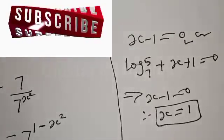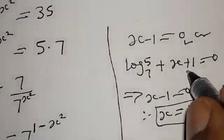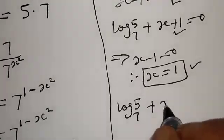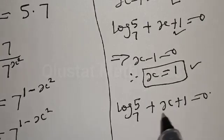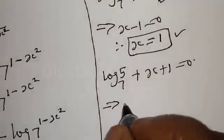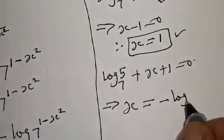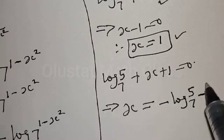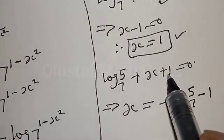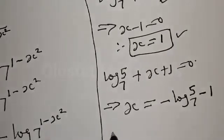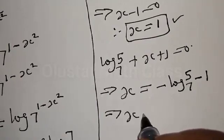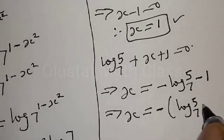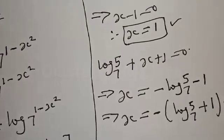That gives us one value of x, which is 1. Now let's look at the second factor: log 5 base 7 plus x plus 1 equals 0. Making x the subject of the formula, we have x equal to minus log 5 base 7 minus 1.